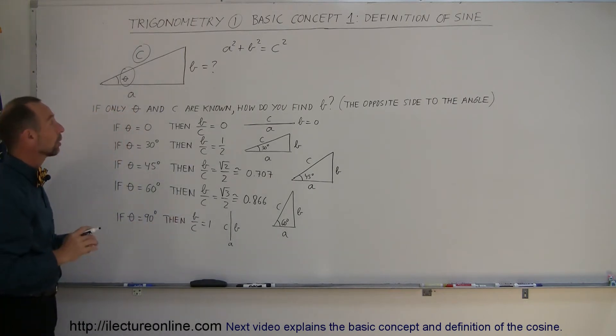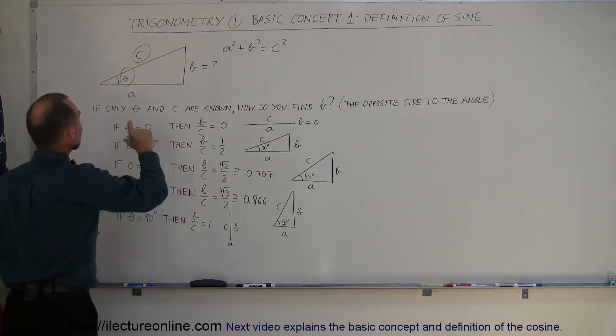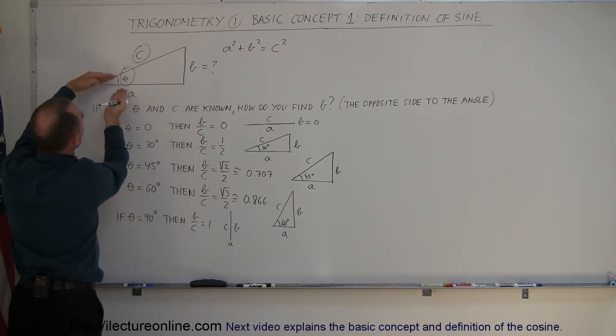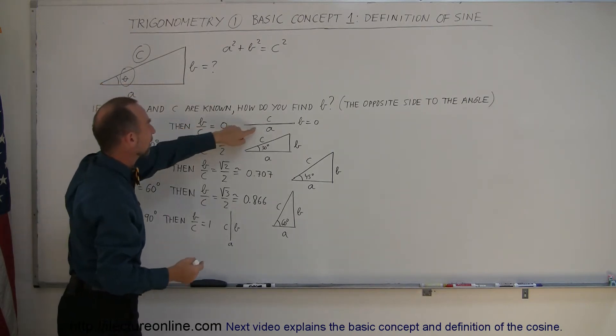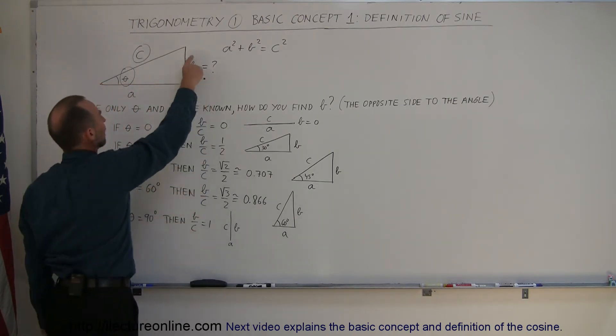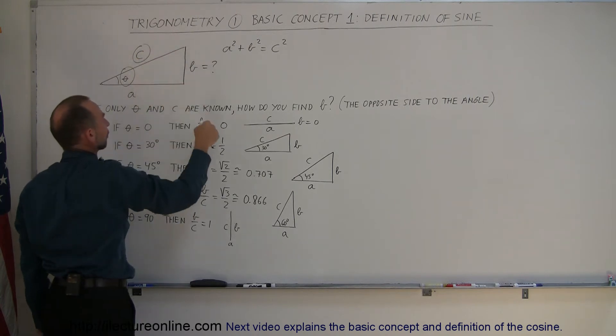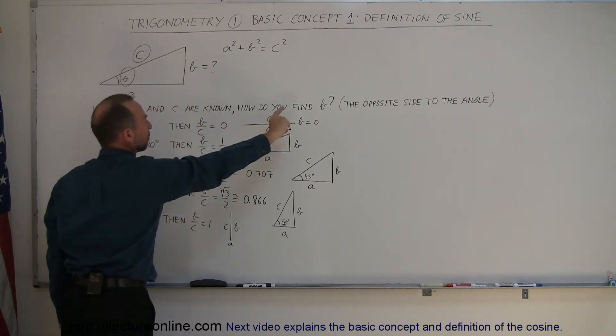To give you some examples, if the angle is zero degrees, then the hypotenuse is right on top of the adjacent side. The ratio of the opposite side over the hypotenuse is going to be zero because at that point B is zero.